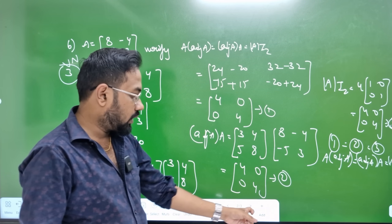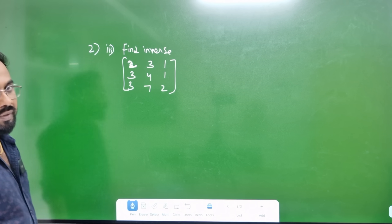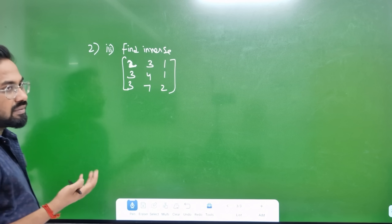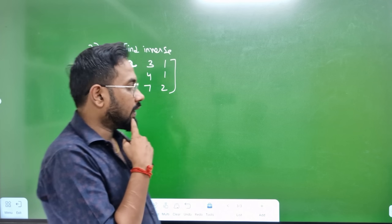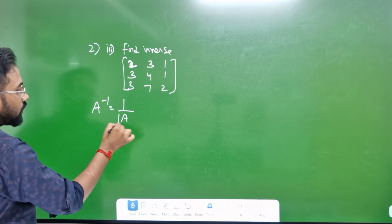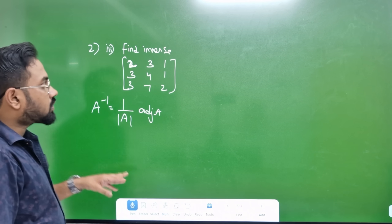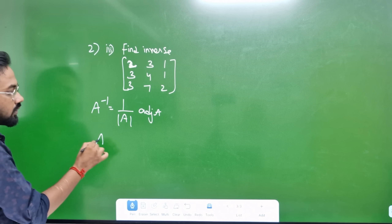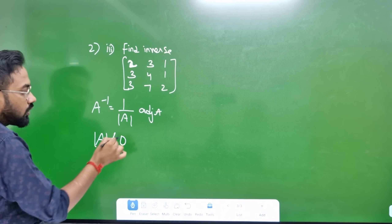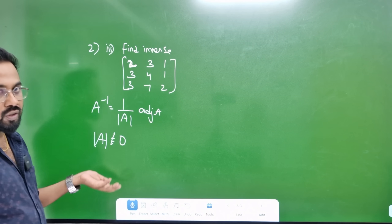OK, this is OK — 3 marks. Find inverse — inverse concept. Find inverse. Inverse is equal to 1 by determinant A into adjoint A — basic inverse formula. So inverse is equal to 1 by det(A). The determinant A is equal to non-singular — non-singular means determinant is not equal to 0.